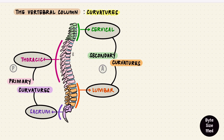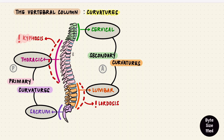If the thoracic curvature is excessive — an increased posterior curvature — the term used is kyphosis. Similarly, if the lumbar curvature is excessive — an increased anterior curvature — it's called lordosis.